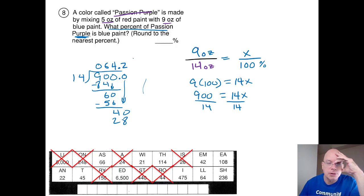I'm trying to round to the nearest percent, so I've got enough information there to do the rounding. Is this number closer to 64% or closer to 65%? That's less than five, so it's closer to 64%.